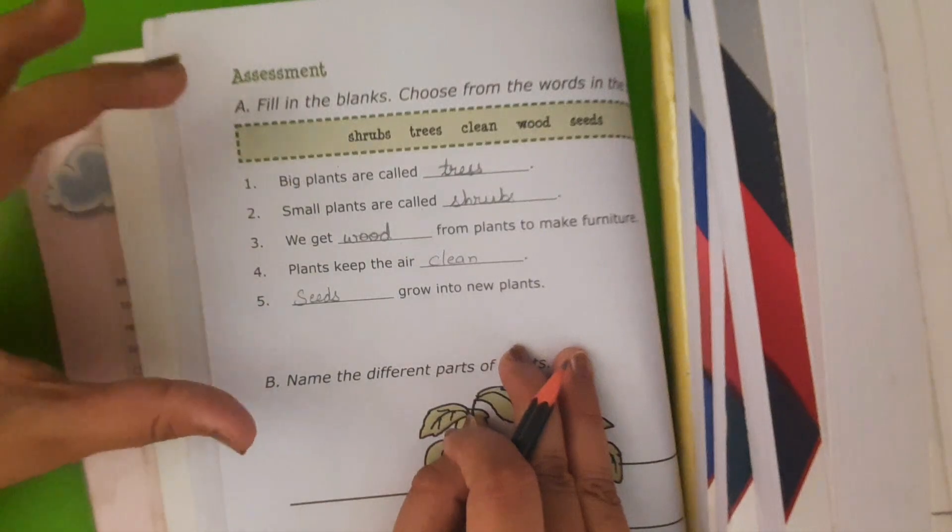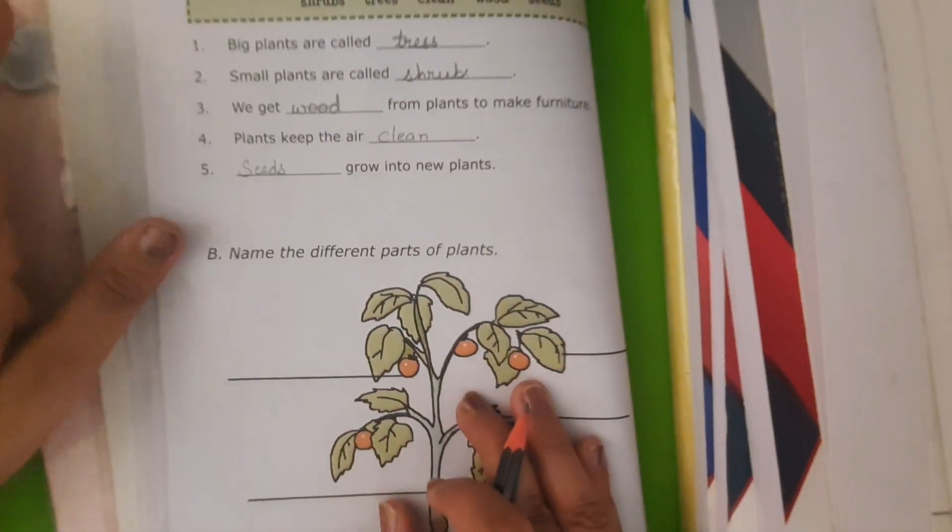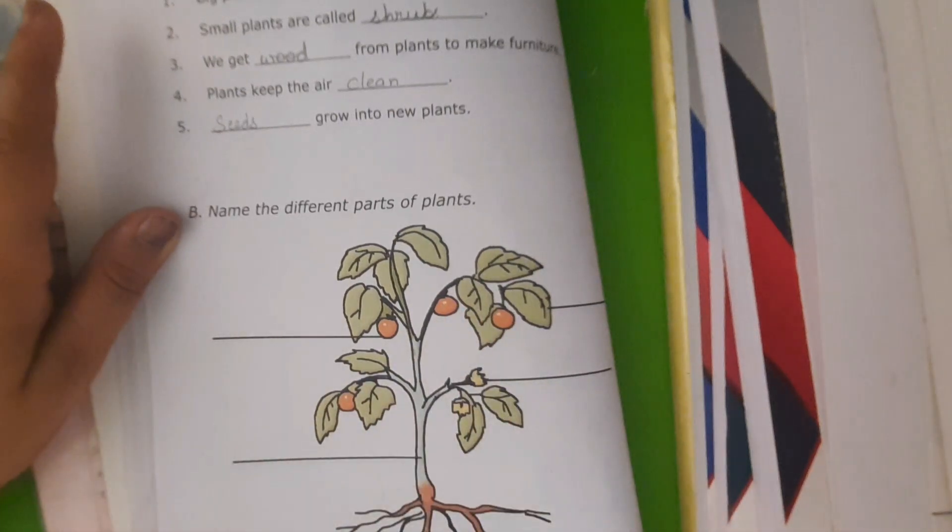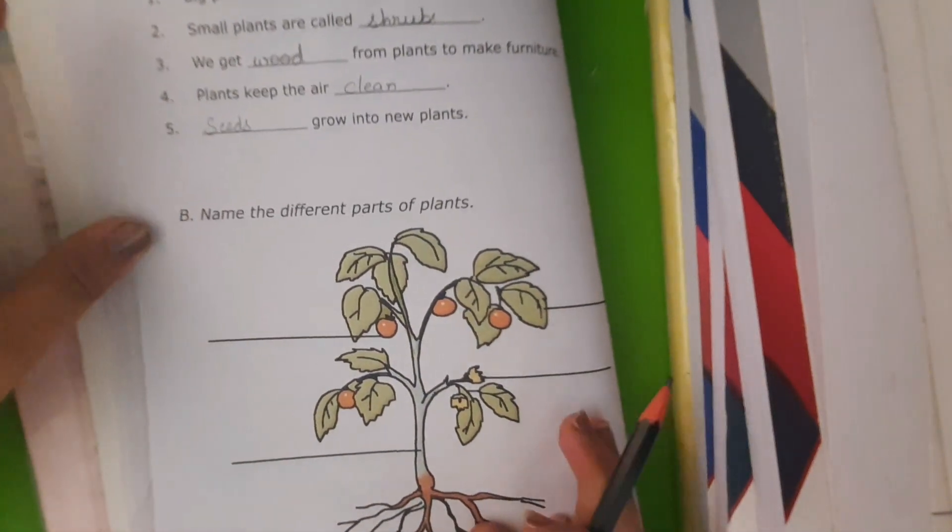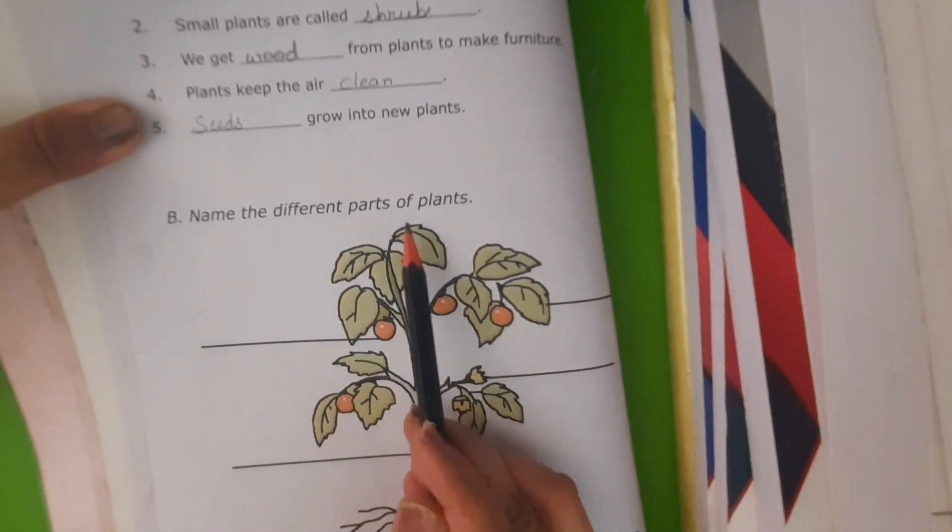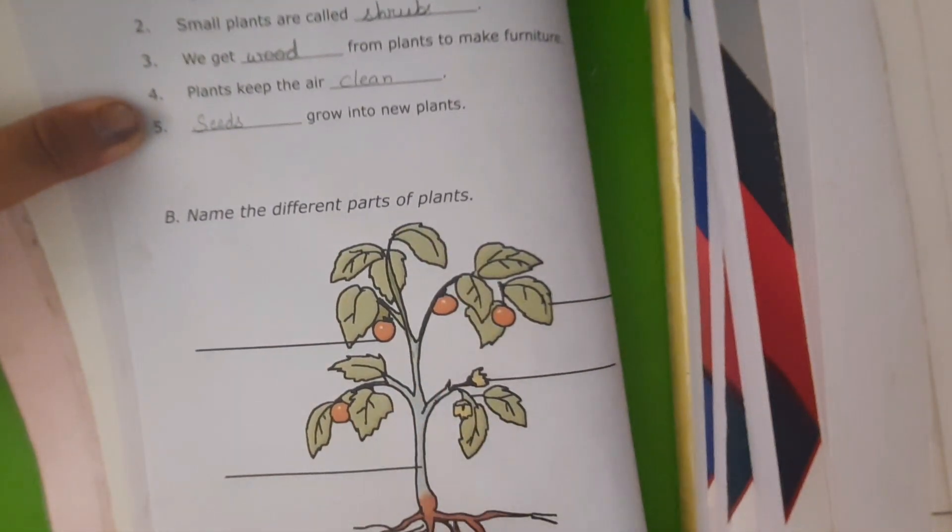And now you also have to do another activity. You have to draw one plant on your notebook and also label its different parts. Name the different parts of plants. Here one picture is given.